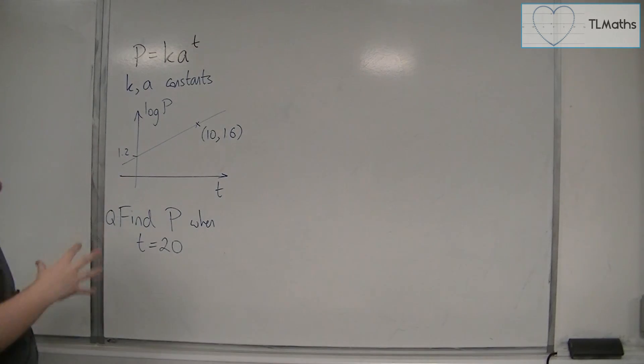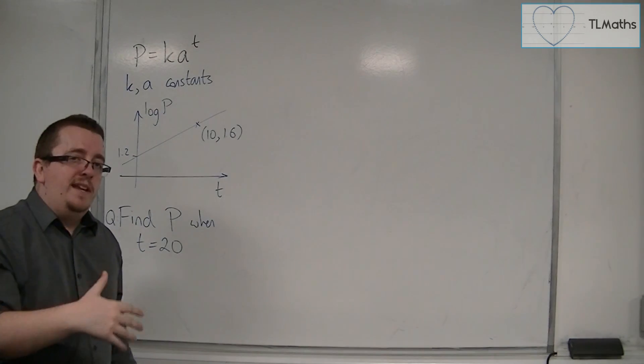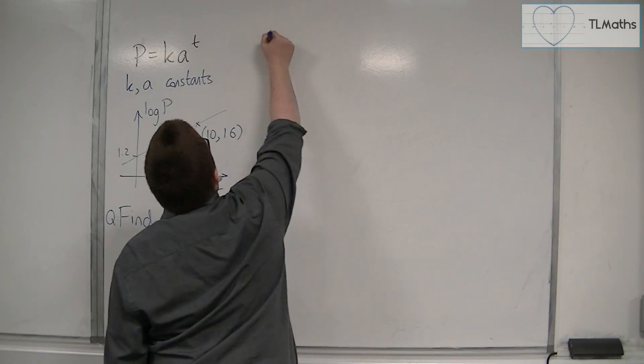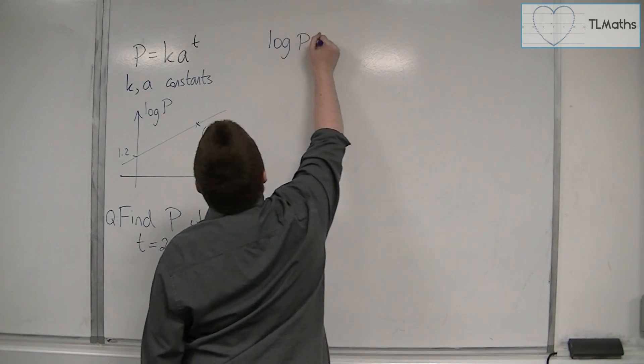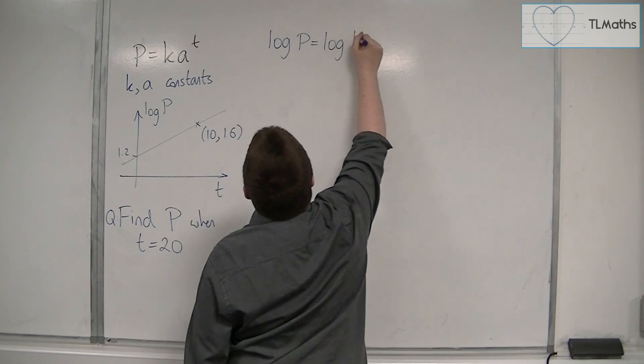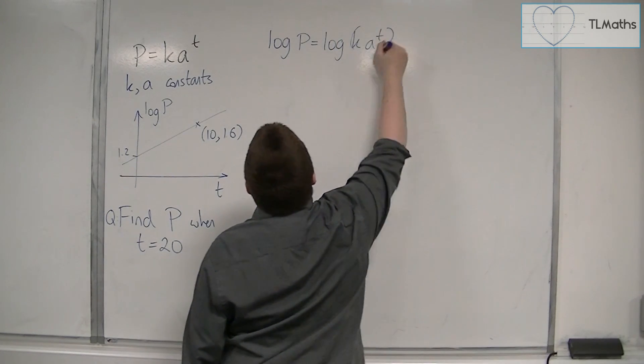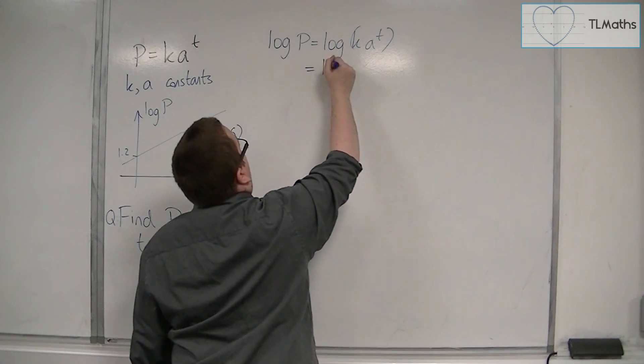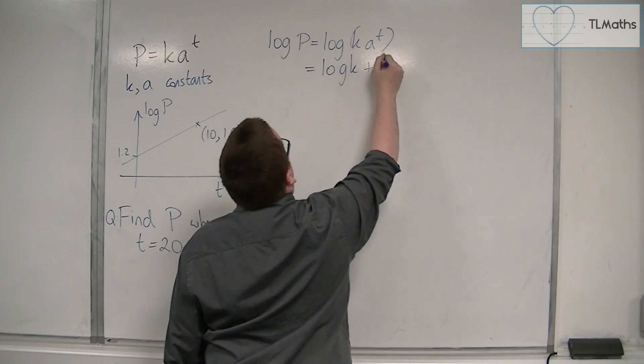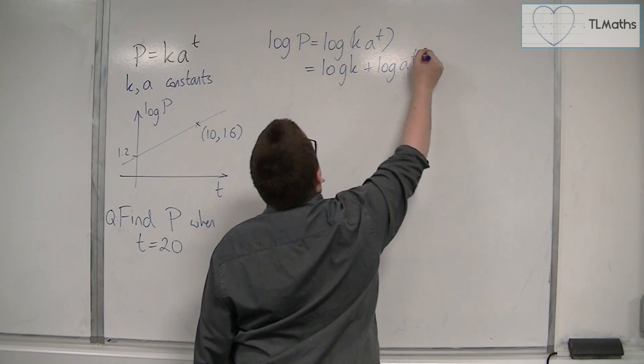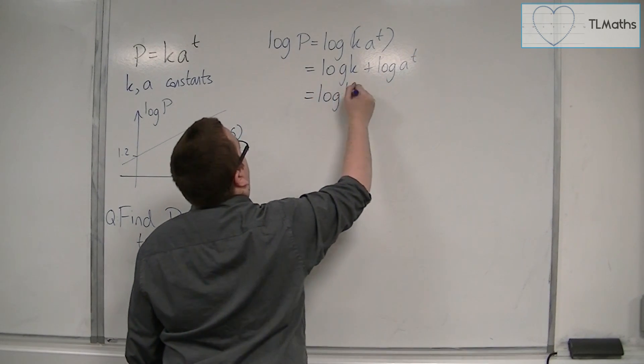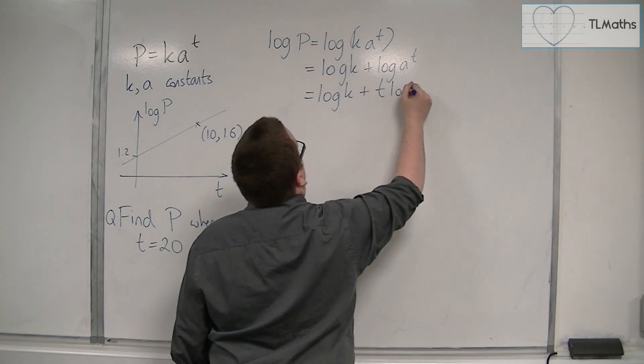So we then want to reduce this to a linear form, and so I'm going to take logarithms of both sides. We're going to take log of P is equal to log of Ka to the T. So the right-hand side logarithm can be split apart, so log of K plus log of A to the T. And the T can come down to the front there, so log K plus T log of A.